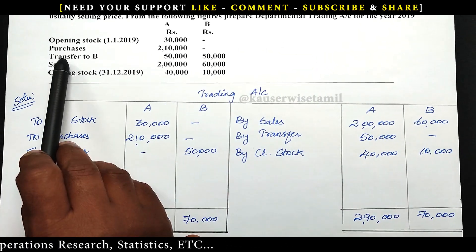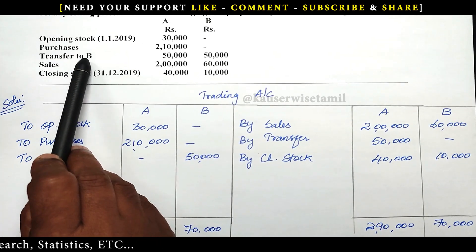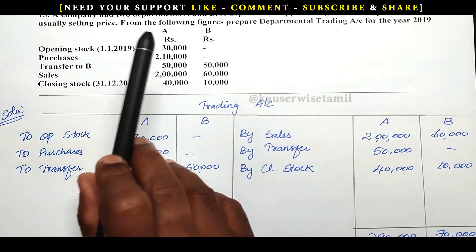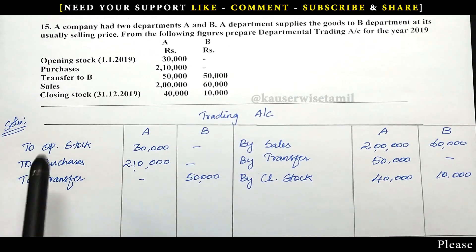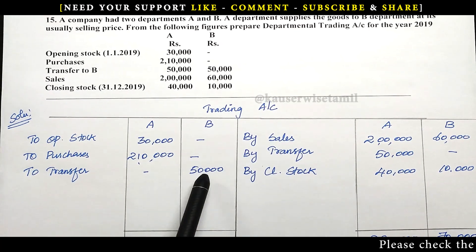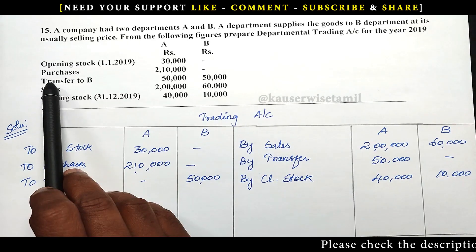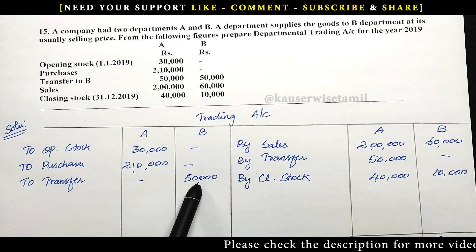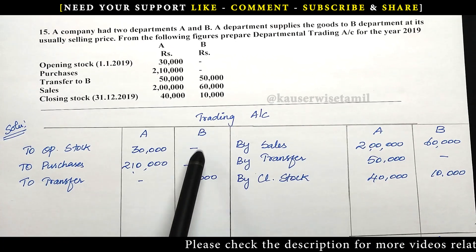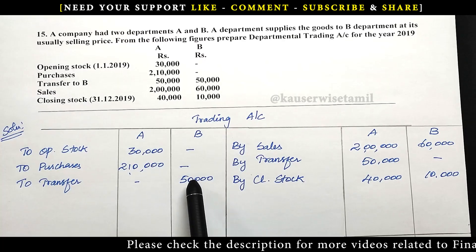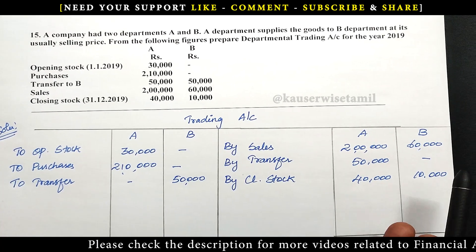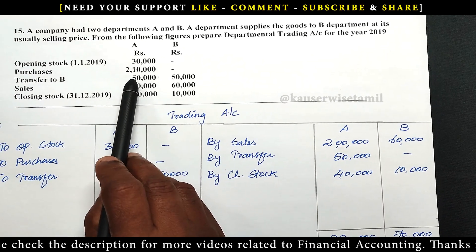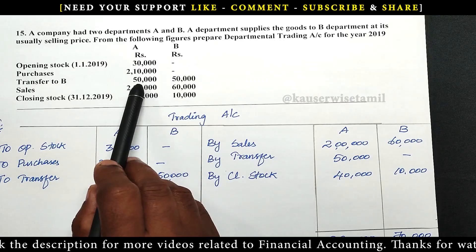Department A is sending and transferring goods to B — 50,000. We will enter this on both debit and credit sides. On the debit side of Department B, we enter transfer — 50,000 — because for B it is like a purchase. On the credit side of Department A, we enter the same amount — 50,000 — because for A it is like a sales.